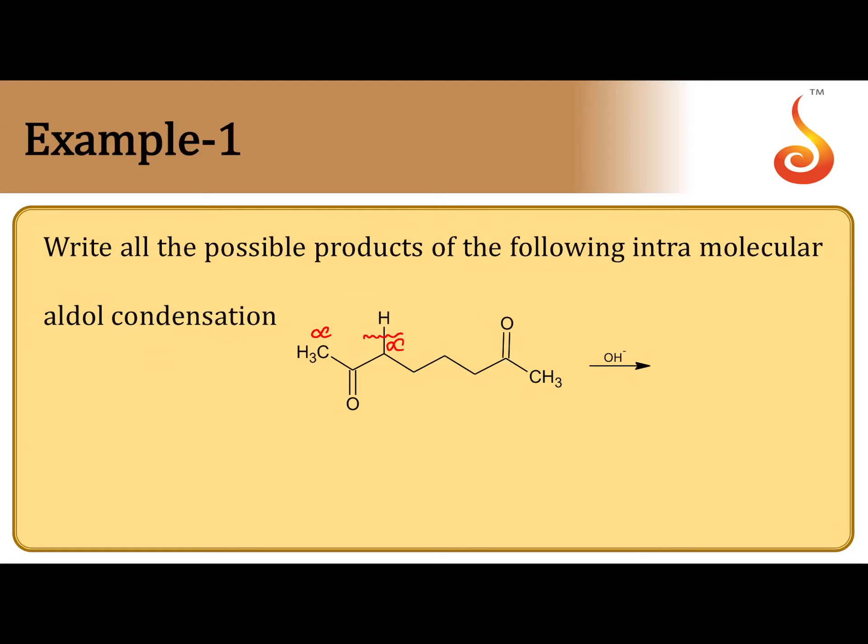Let us take this one. Alpha hydrogen migrated to oxygen. This is not the mechanism. Then alpha carbon attacks at carbonyl carbon. Pi bond is broken. So now the alpha carbon when it is connected to carbonyl carbon, that carbonyl carbon after the formation of ring will become beta carbon.